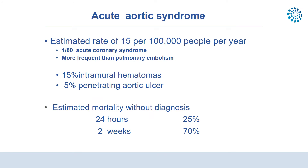The estimated incidence of Acute Aortic Syndrome is 15 out of 100,000 people per year. Compared to other cardiovascular emergencies presenting with chest pain, Acute Aortic Syndrome is more frequent than pulmonary embolism but significantly less frequent than acute coronary syndrome, such as myocardial infarction — approximately one Acute Aortic Syndrome case per 80 acute coronary syndrome cases.